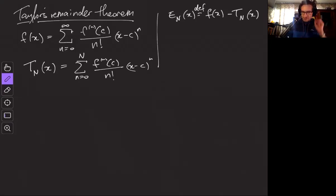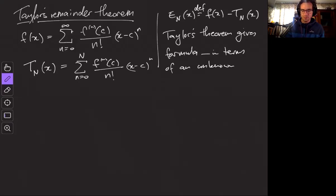says that I define the error, the nth error term, to be the function minus the nth Taylor polynomial. And then Taylor's theorem gives a bound on this. Well in fact it actually is a formula for this, but this is in terms of an unknown number. So in the course I'm teaching at the moment that number was denoted by xi.